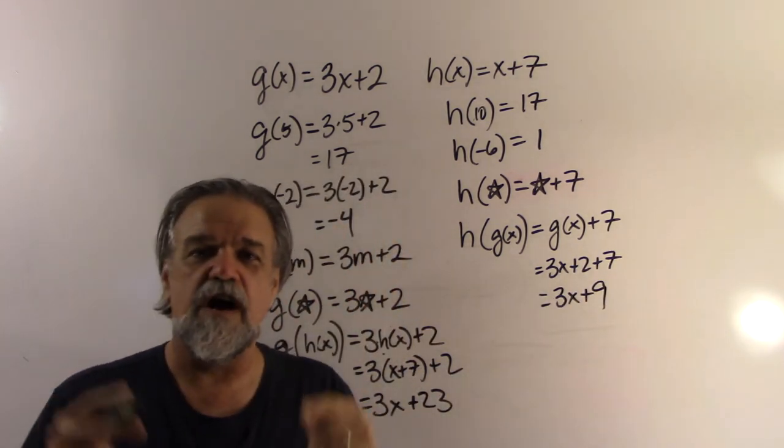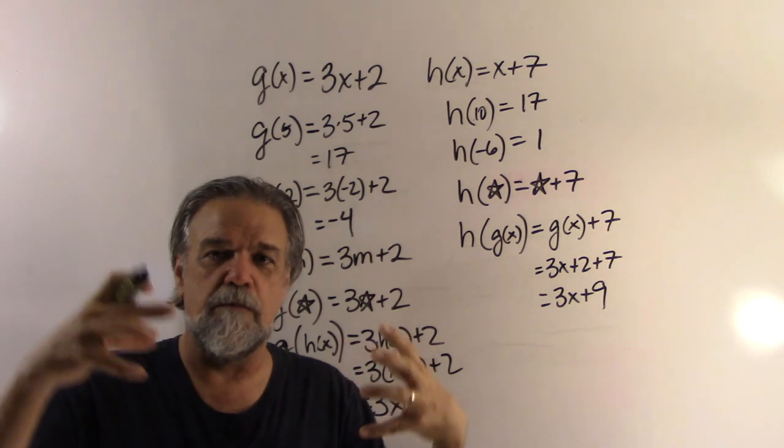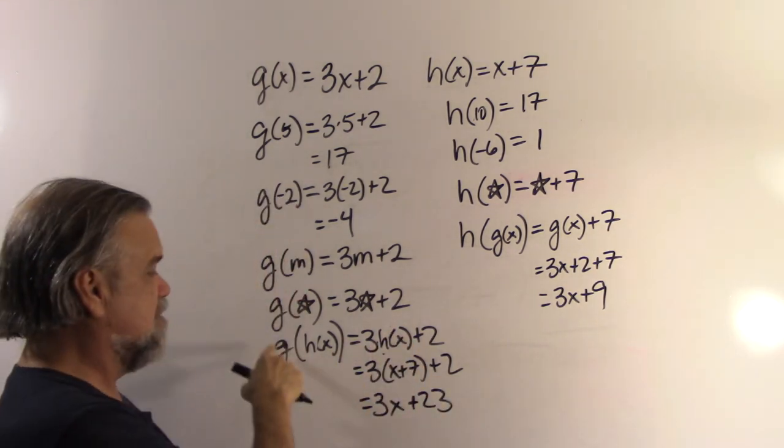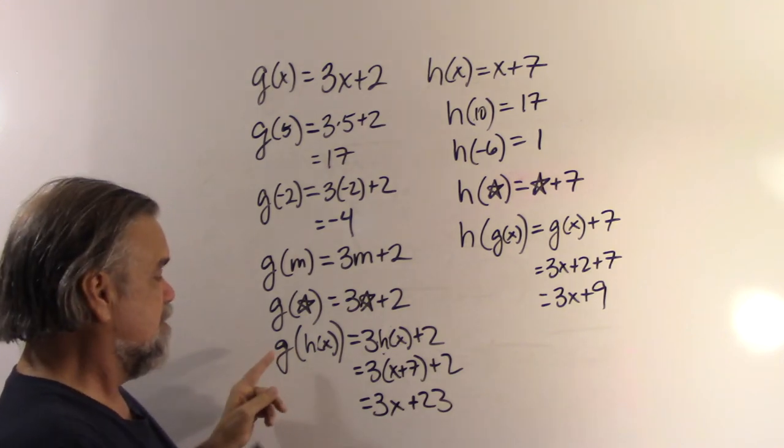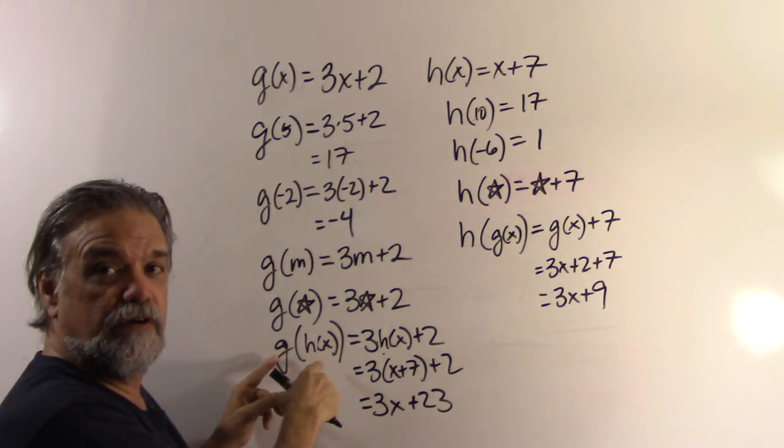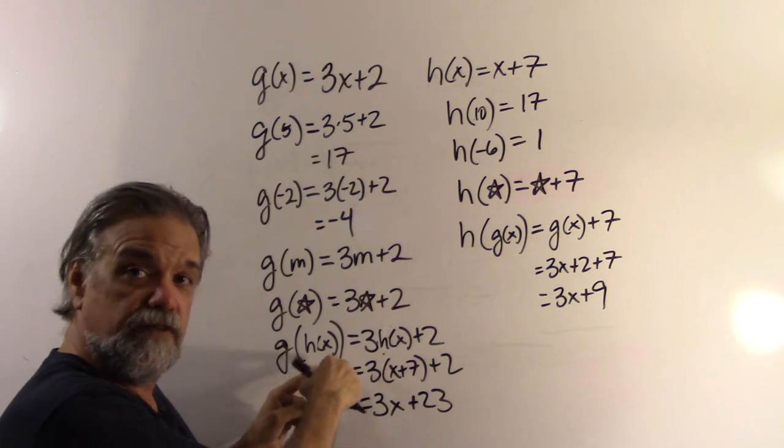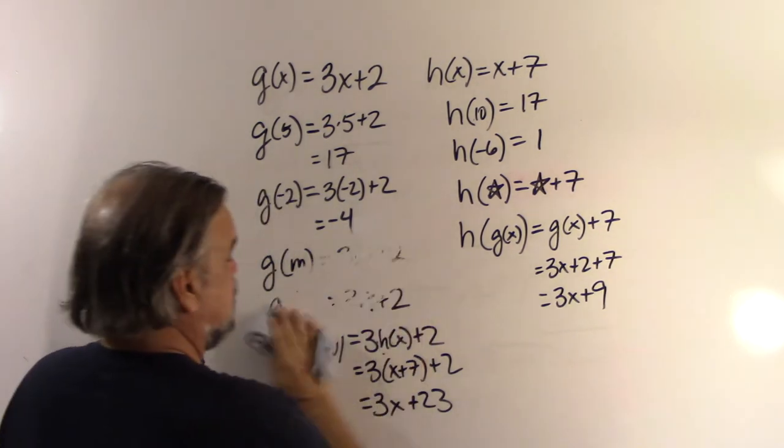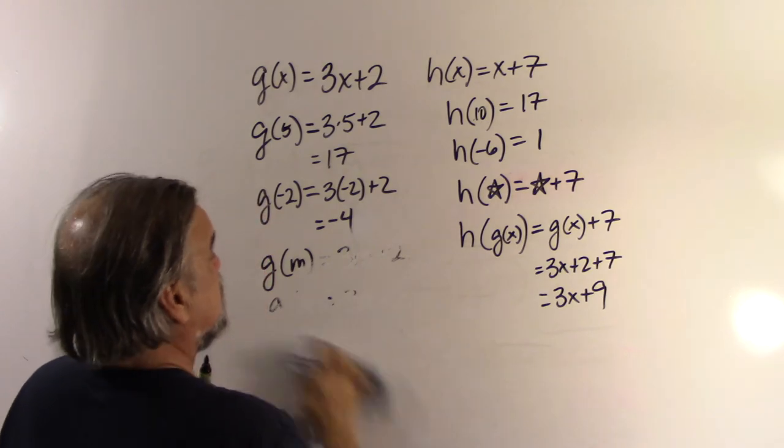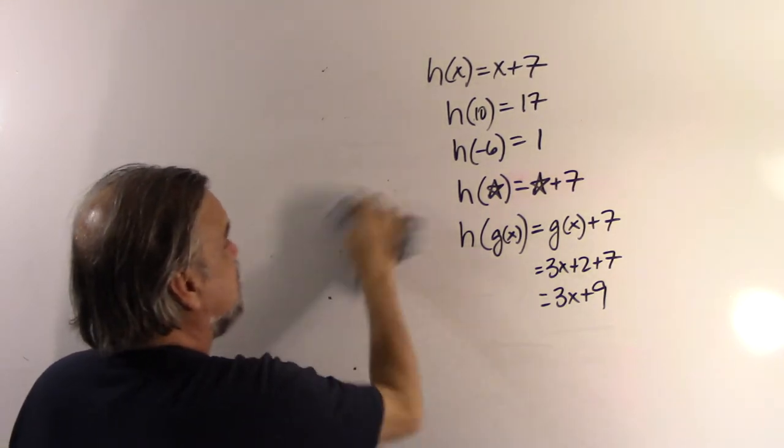This is what's known as composition of functions. When you compose functions, you take g of h of x. Basically what you're doing is you're performing the g function on the result of the h function.